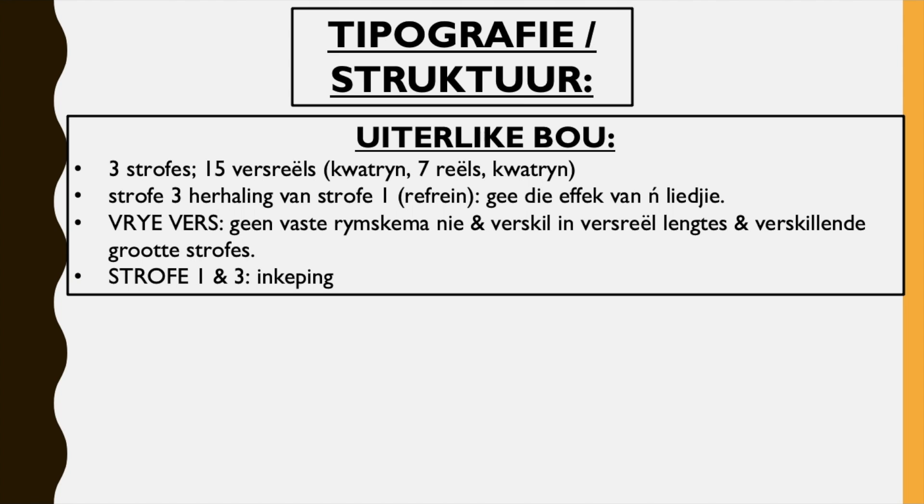Vrye fasie — in this case it refers to vrye fasie in the build, like what it looks like. So er is geen fasiaere rymskema — there is no set rhyme scheme. Verschillende fasiaels en lengtes — there's a difference in the length of the lines, and also verschillende grootte strofes — the stanzas also aren't exactly the same. So because of that, the poem will look kind of all over the place, that is why it's vrye fasie.